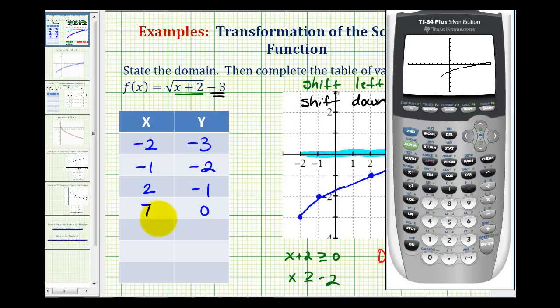This gives us a nice visual of the graph, but we also want to verify our table of values. To do this, before we press table, let's check our table set. We press second window. Let's change this independent option to auto. So highlight auto and press enter. And now we'll press second graph.